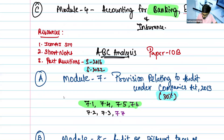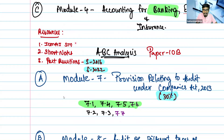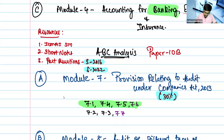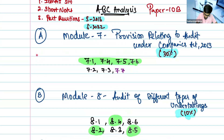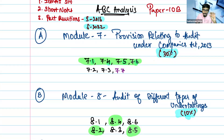Now for Paper 10B, the auditing part. For resources, you will use CMA study material, your own short notes if already prepared, and past exam questions of syllabus 2016 and syllabus 2022 as a third preference. In the A category, I have put module 7 alone — that is nearly 30%. Within that, the reference sections 7.1, 7.4, 7.5, and 7.6 have a high probability of being asked, both as individual questions and MCQs.